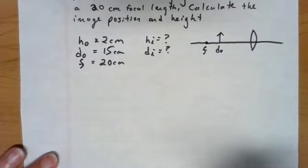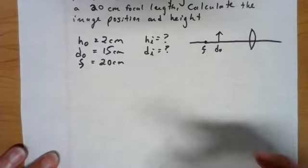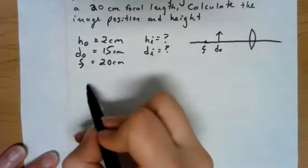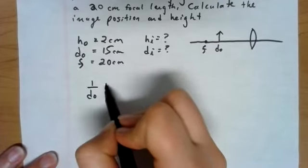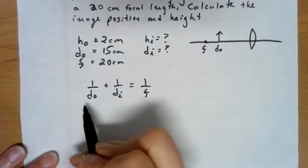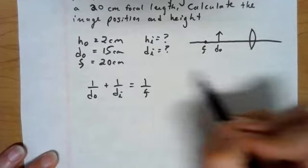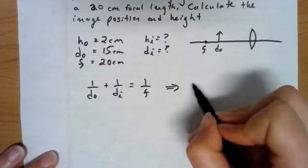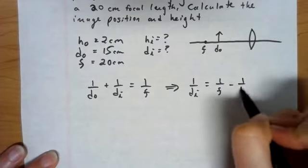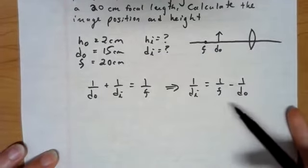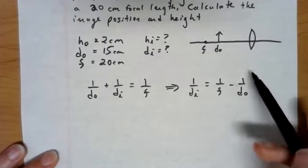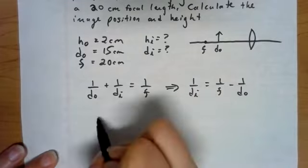You could do ray tracing and figure all of this out. But this is the setup according to this question. So first thing I'm going to look for is the image position. I can't find the height without DI. So I have to do this position first. So I'm going to do my lens equation.